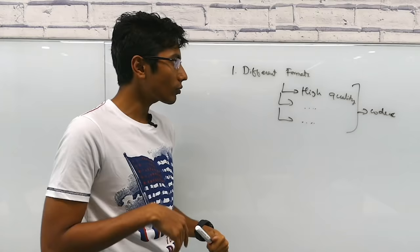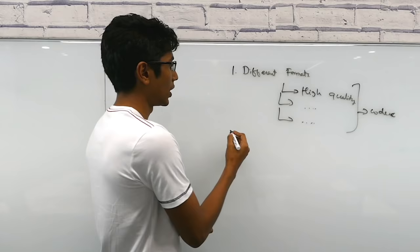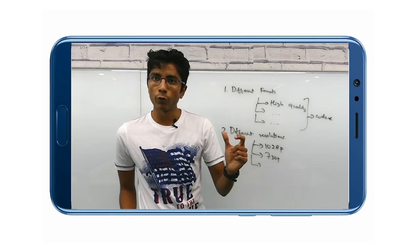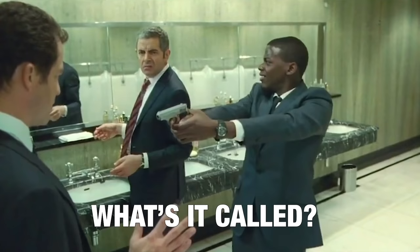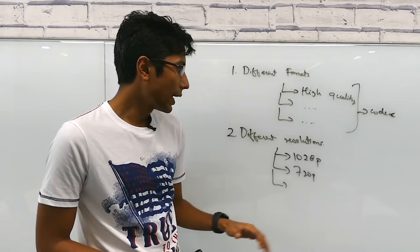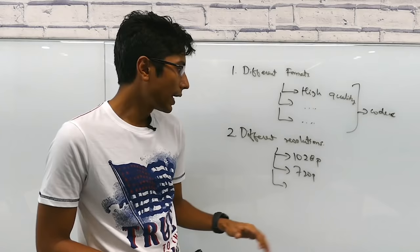The second thing Netflix does is play with different resolutions. If you're watching on your cell phone, the resolution you need is much less than on your TV or laptop. A single video has multiple formats and resolutions. Each of these formats and resolutions create tuples or pairs. You have high quality 720p.